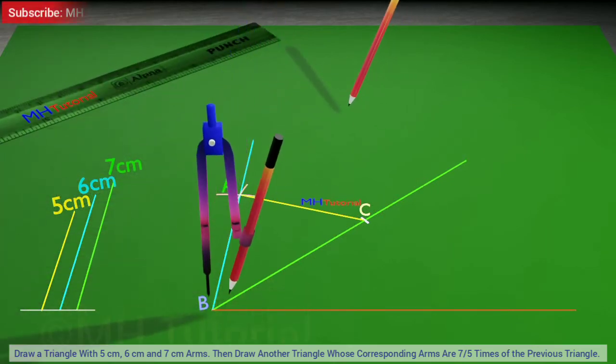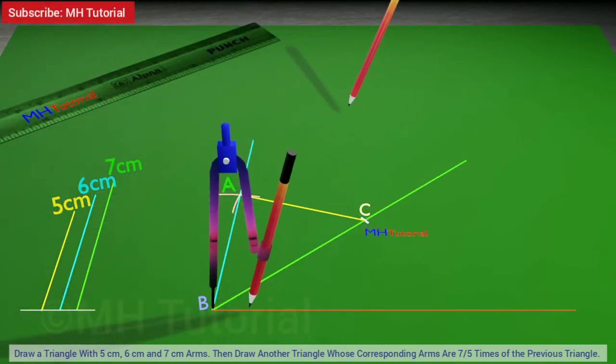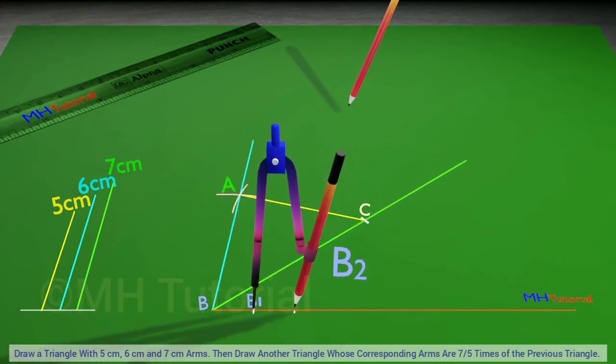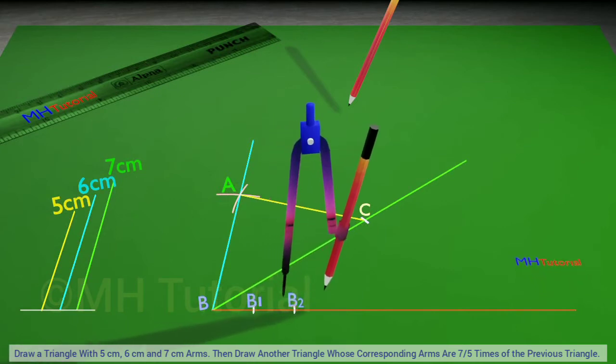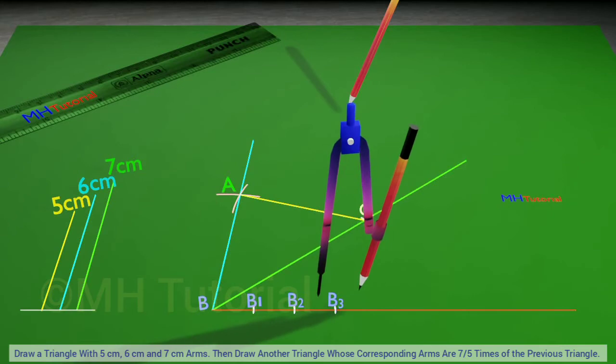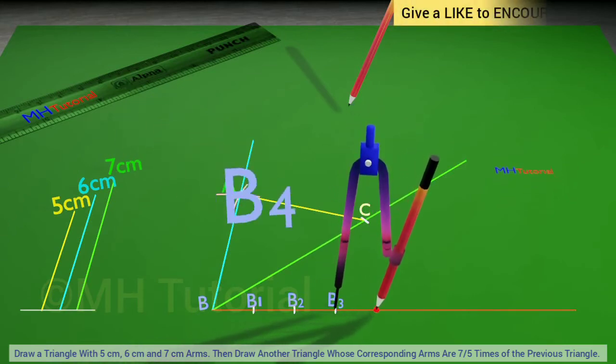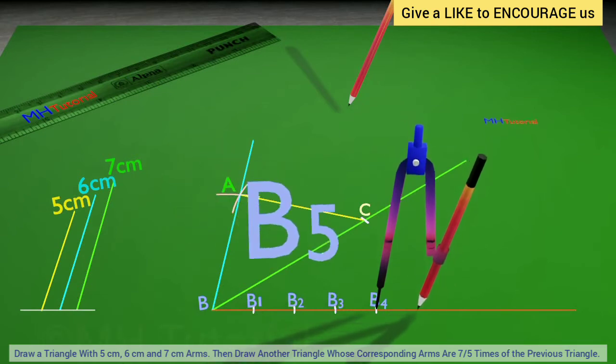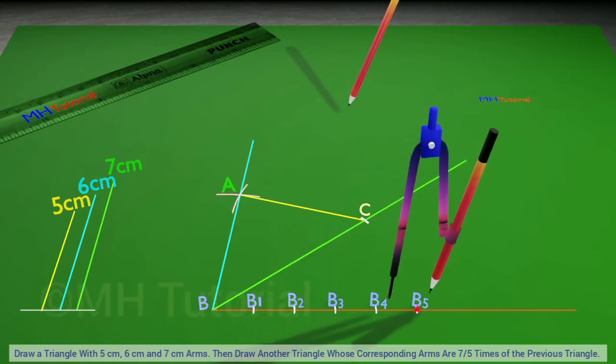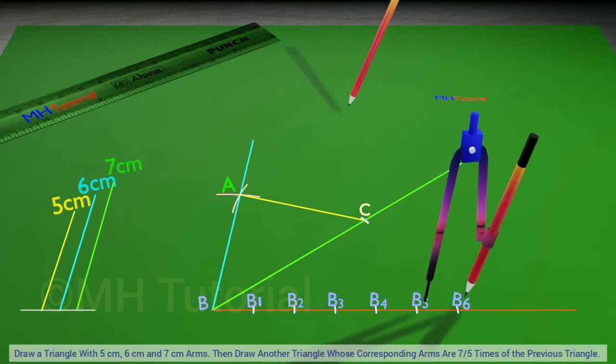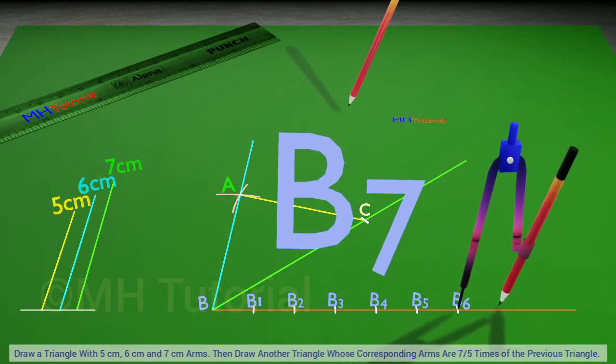After that, start cutting off the line segment into 7 equal parts, since the arms of the required triangle are 7 by 5 times larger, and between 7 and 5 the bigger one is 7. In any other question, if the ratio is different, the bigger between the numerator and the denominator is to be taken as the number of cuts to make. The equal line segments are named as BB1, B1B2, B2B3, B3B4, B4B5, B5B6, B6B7, etc.